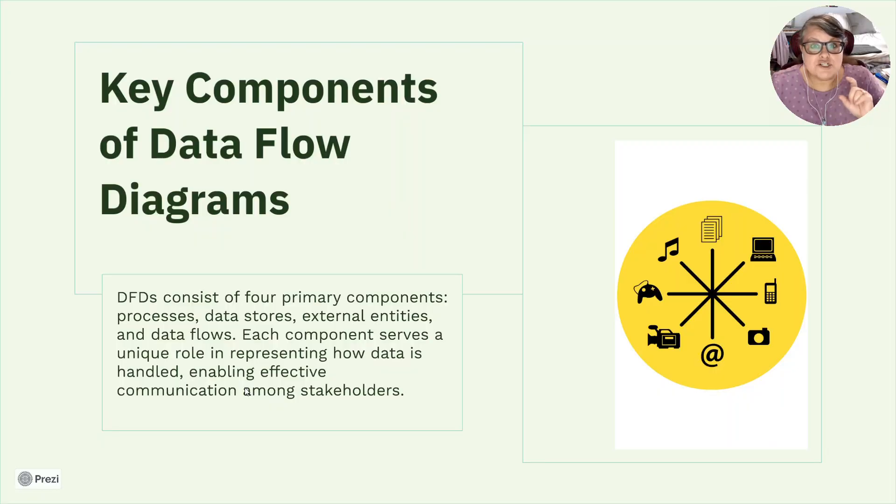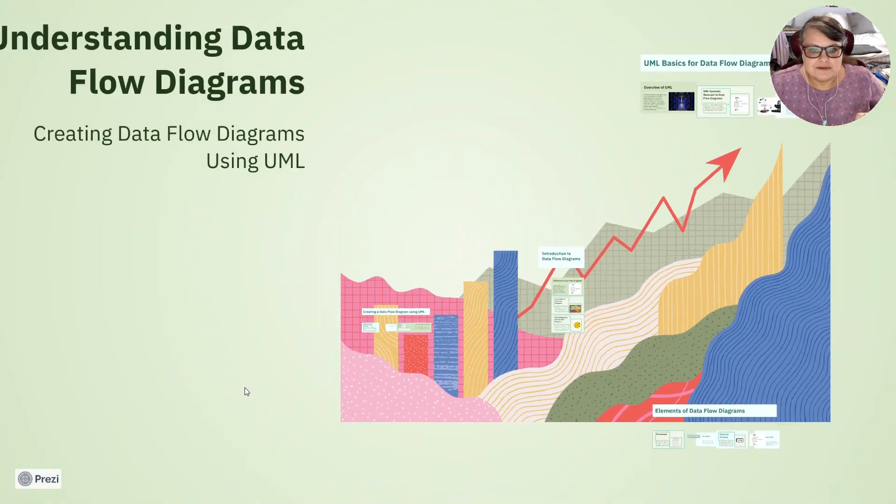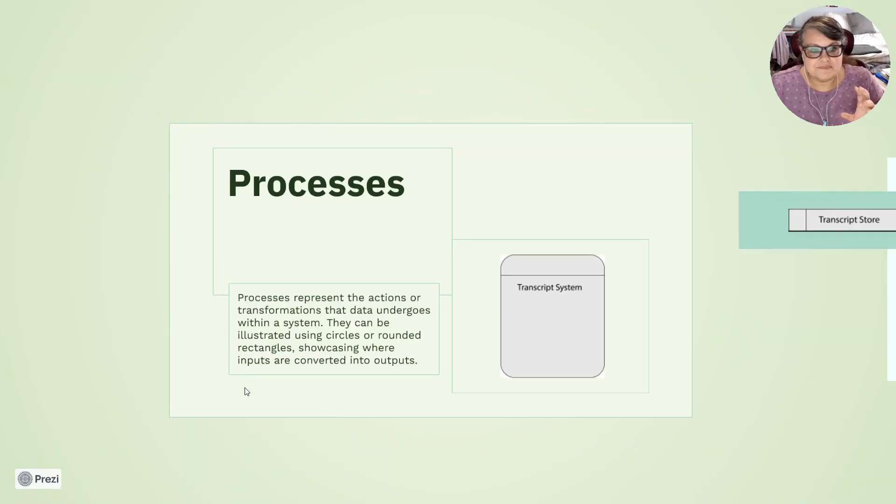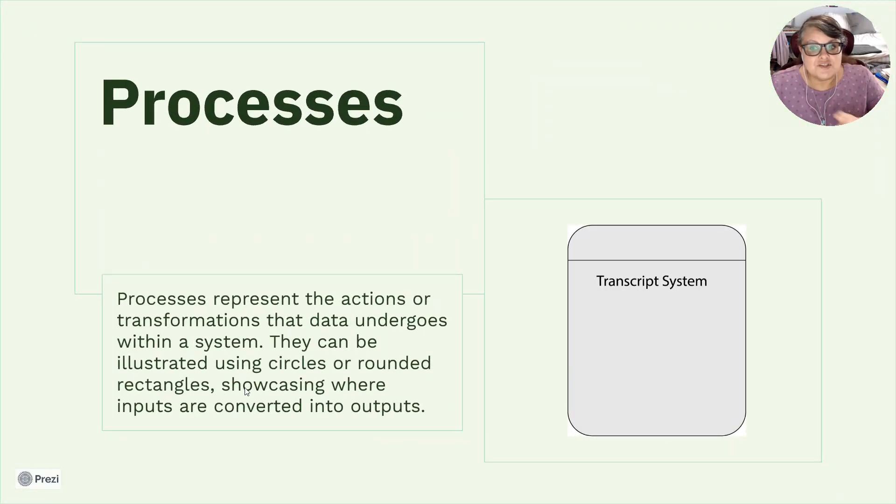Let's continue to go on. I'm going to show you each of these symbols in a breakout. Elements of data flow diagrams. Here's where you're going to see the illustrations I did myself to show you an example of the symbols for your data flow diagrams. Processes. The transcript system is processes. Processes represent the actions or transformations that data undergoes within a system. They can be illustrated using circles or rounded rectangles showcasing where inputs are converted to outputs. This is the UML way of doing it with a rectangle with a rounded corner where you put what the system is.